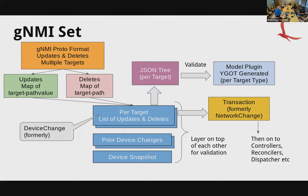You can have an update of many devices in one GNMI call, and deletes in the same call. We form a map of the target — which is the device — to paths and values. Then we form another map of targets to just paths, because if you're deleting it, you don't need the value. From this, we form a device change, which is a list of changes per target — one device change for each device changed in that GNMI set. It's a list of updates and deletes.